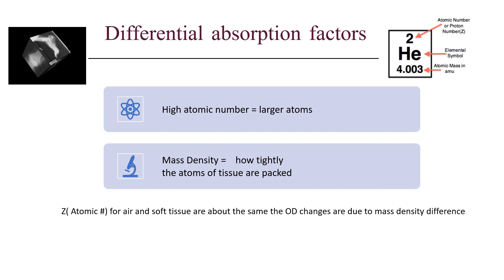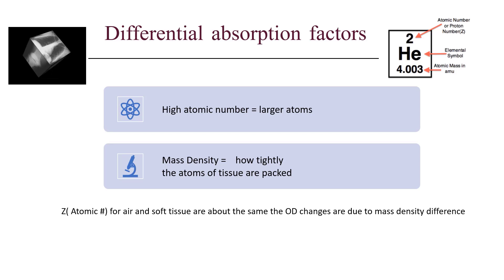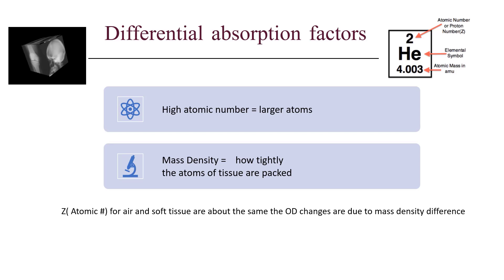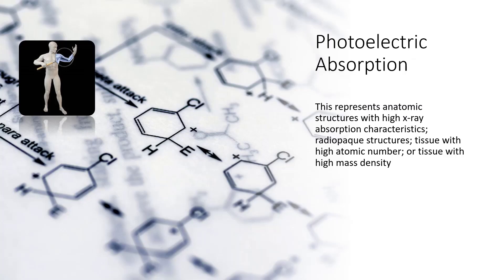Differential absorption is key to being able to get a quality examination. Differential absorption is based upon the atomic number of the atoms and the mass density — how many electrons do we have in the atoms, and how densely are they packed. When talking about high density, you're talking about bone; when talking about low density, you're talking about soft tissue. To create contrast or tissue densities, we look at the photoelectric absorption properties of the tissue. This represents anatomic structures with high x-ray absorption characteristics, such as bone, and lower absorption characteristics, such as fat and tissue. The differences in contrast are what allow us to create an image.